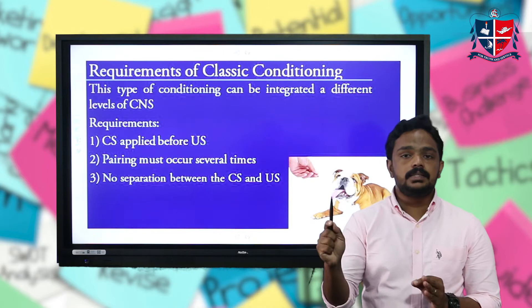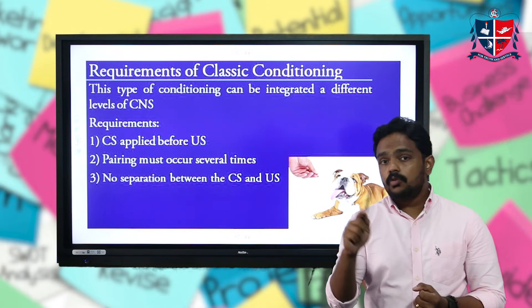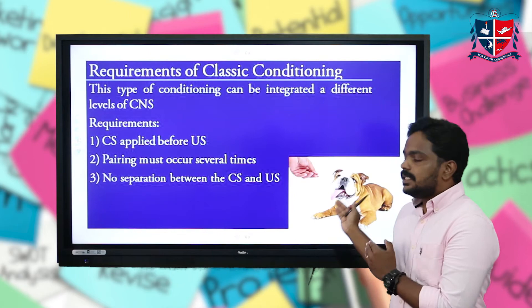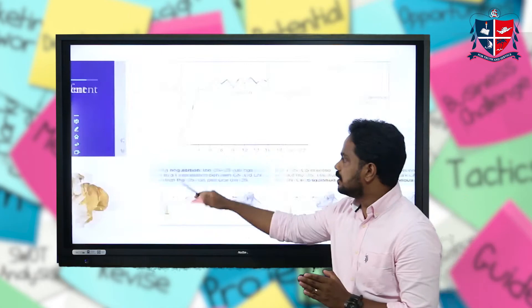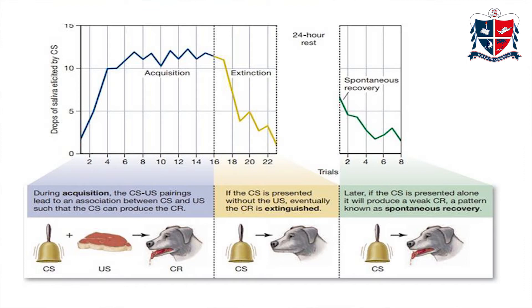Pavlov established three basic requirements for classical conditioning: first, the conditioned stimulus must always be applied before the unconditioned stimulus; second, the pairing must occur several times — over minutes, hours, or even days; and third, there must be no separation between the conditioned stimulus and the unconditioned stimulus. From this research, he identified three phases shown in a graph: the acquisition period, the extinction period, and the spontaneous recovery period.